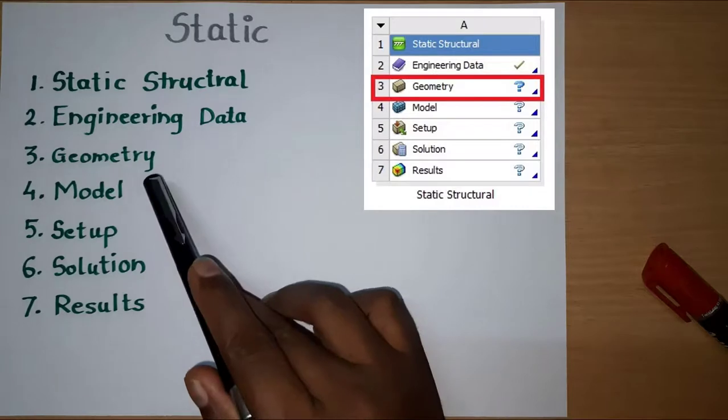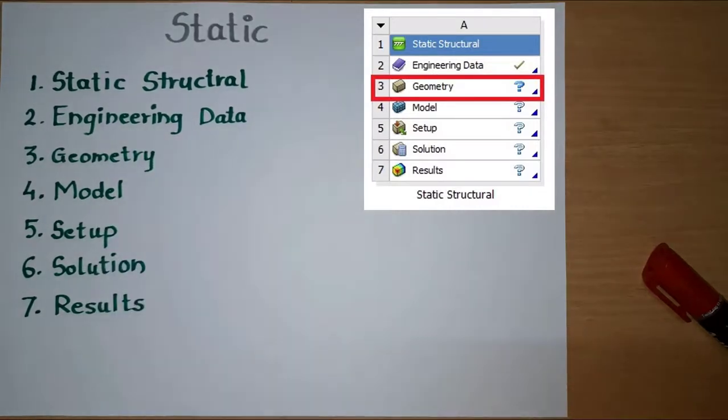In third step, geometry, we can directly import structural CAD model from different software like SolidWorks, Creo, etc. Or, we can make one CAD model even in the geometry. ANSYS software provides two types for modeling options. One is design modeler, and second one is space claim. Space claim is a recent modeling software included in ANSYS. Once we are done with the geometry, we can move ahead to fourth step.